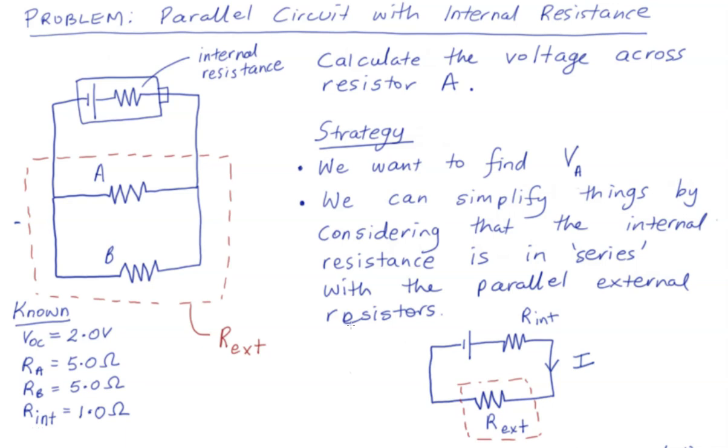So here we have our problem again of the parallel circuit connected to a battery which has an internal resistance, and what you need to do is to calculate the voltage across resistor A.